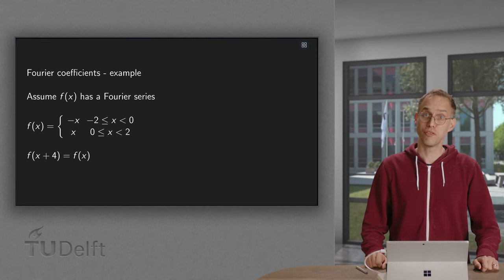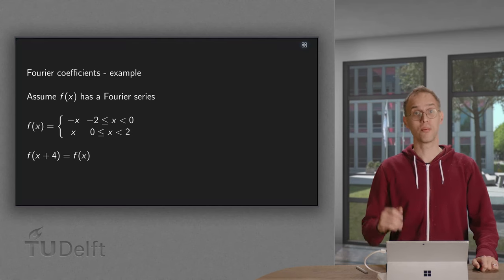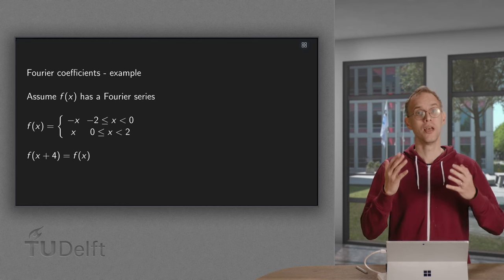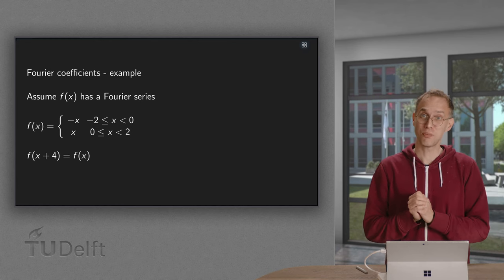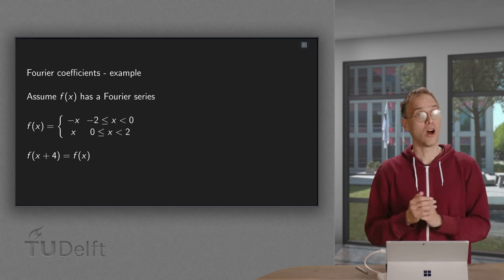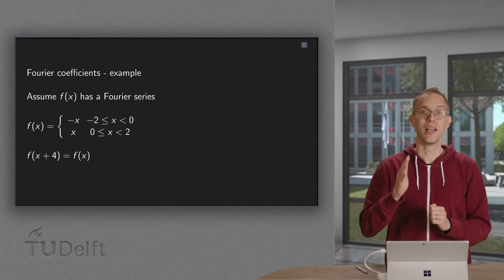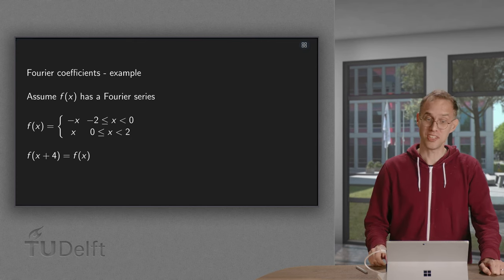Given that f of x has a Fourier series, we have found formulas for its coefficients. But how does this work in an explicit example? Are they hard to calculate by hand? Let us see in this example.